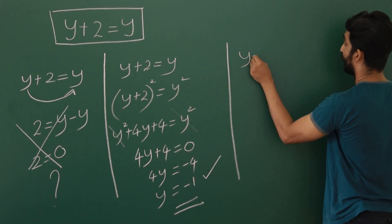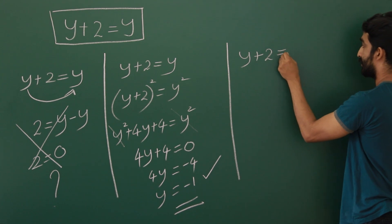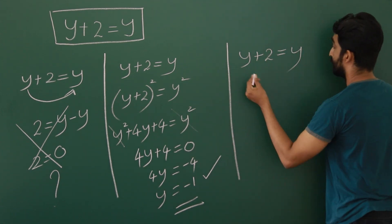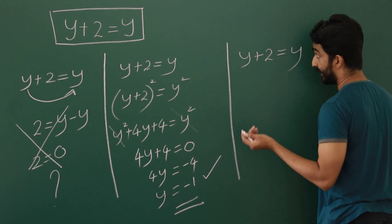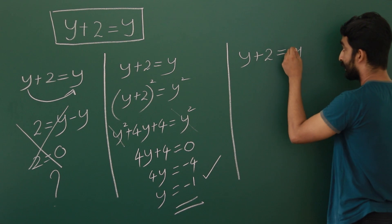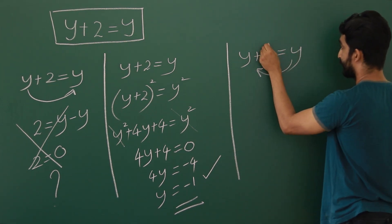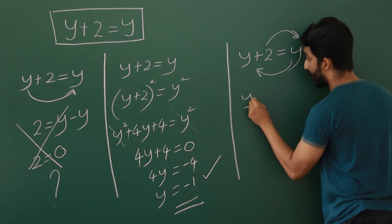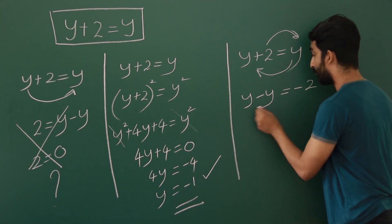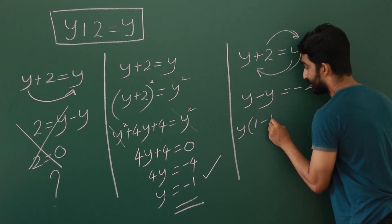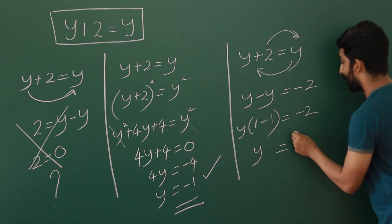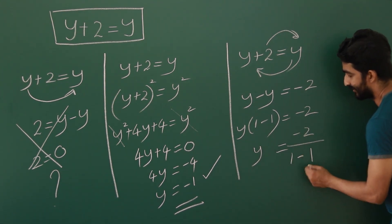We have y plus 2 equals y. For someone who is against this answer, this is also much better and acceptable, not beautiful but more acceptable. What you can do is bring this y to this side and send this to that side, so it will be y minus y equals minus 2. Then you take y out. Then it is 1 minus 1 equals minus 2. Then y equals minus 2 divided by 1 minus 1.